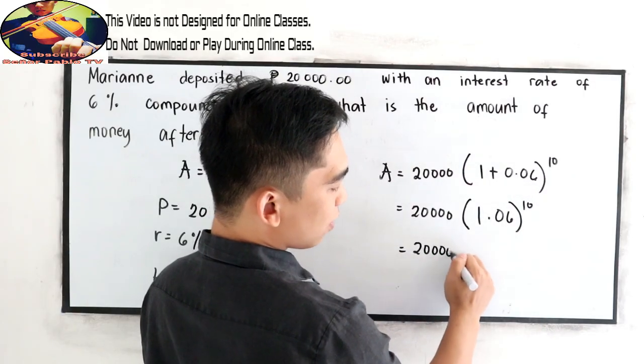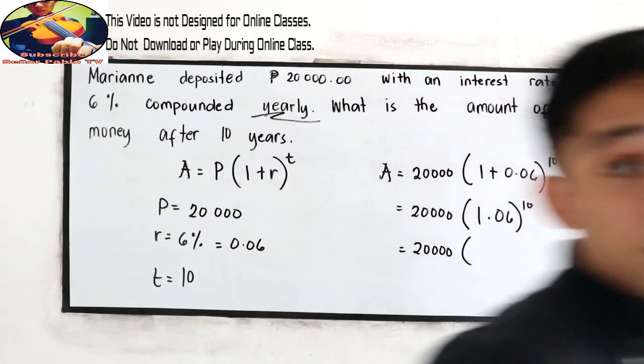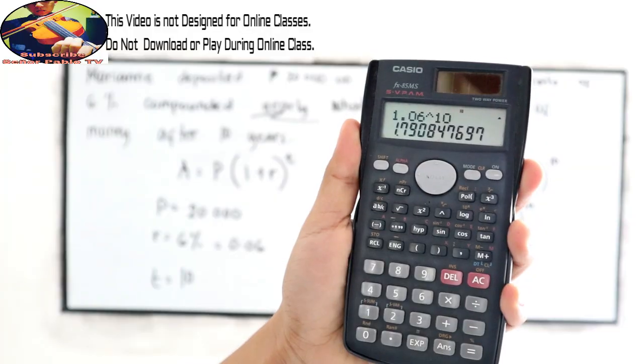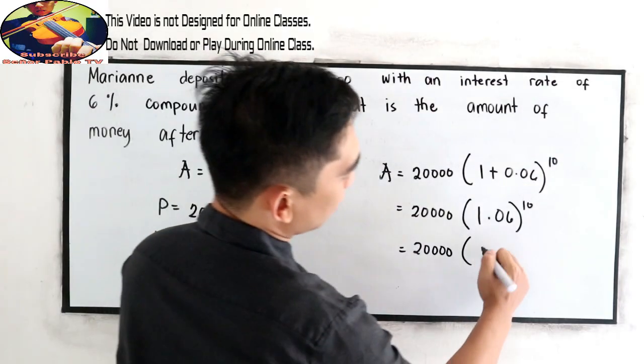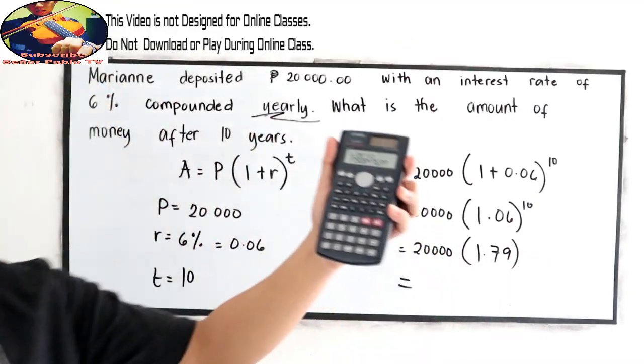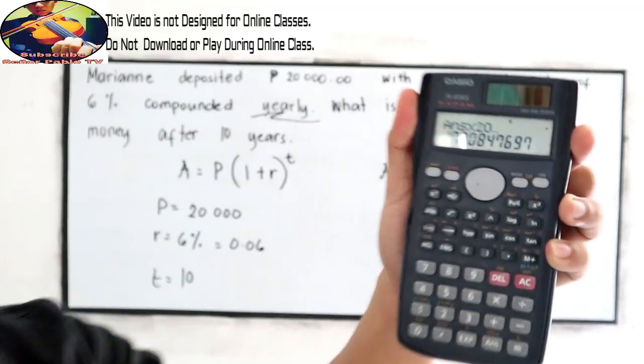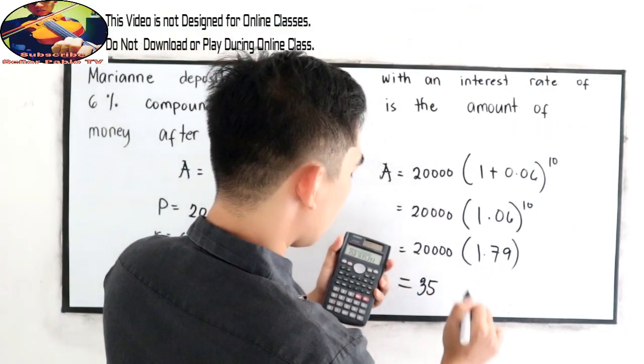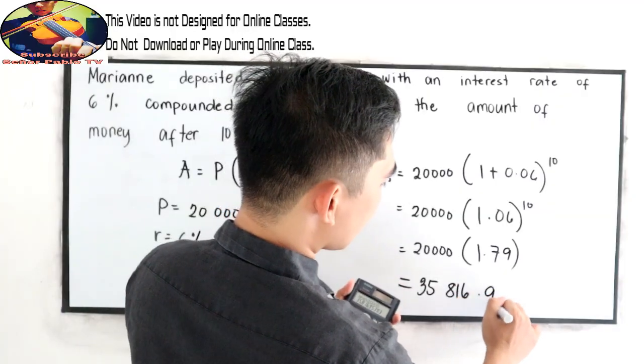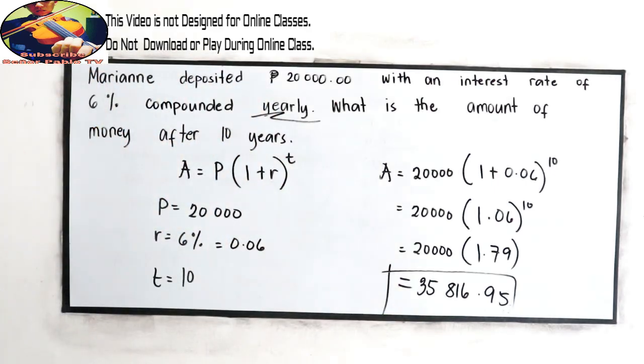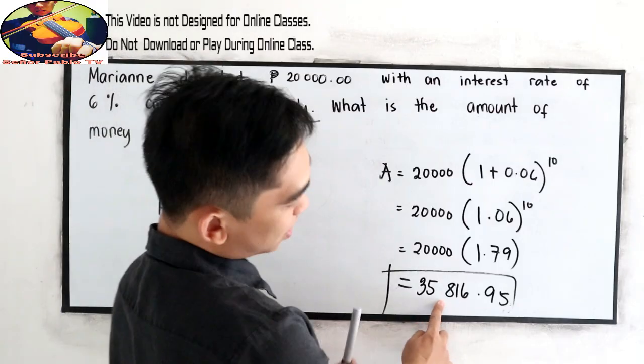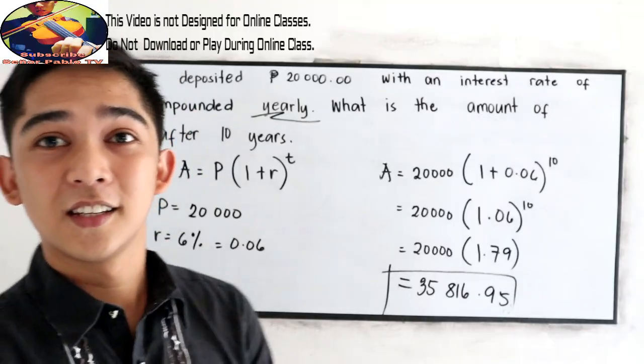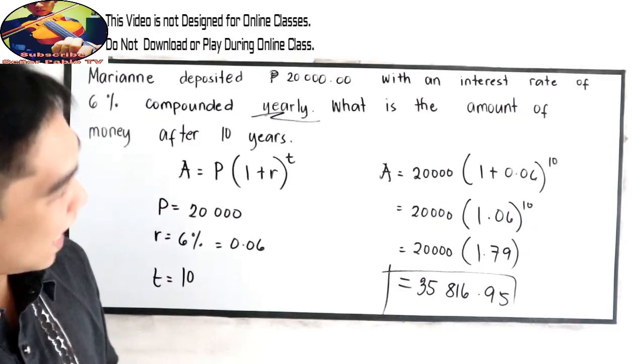So 20,000 times 1.06 raised to 10. Copy 20,000, use your calculator. 1.06 raised to 10, that is 1.79. Multiply it to 20,000. So 35,816.95. So this will be the amount of money after 10 years. 35,816. From 20,000 to 35,816. So almost doubled after 10 years.